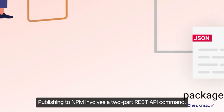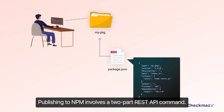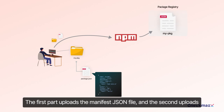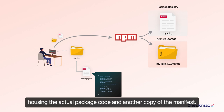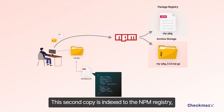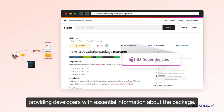Publishing to NPM involves a two-part REST API command. The first part uploads the manifest.json file, and the second uploads the tar.gz tarball file housing the actual package code and another copy of the manifest. This second copy is indexed to the NPM registry, providing developers with essential information about the package.